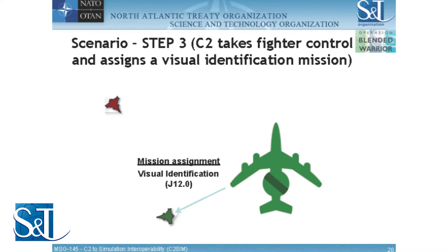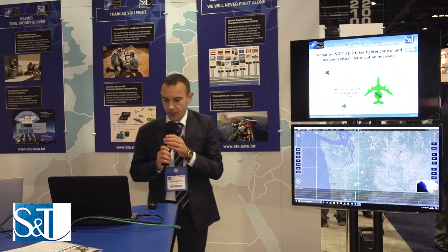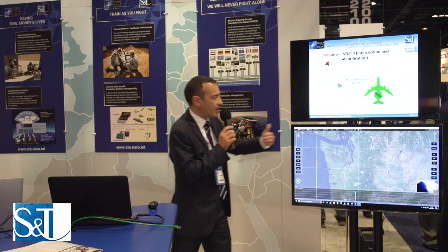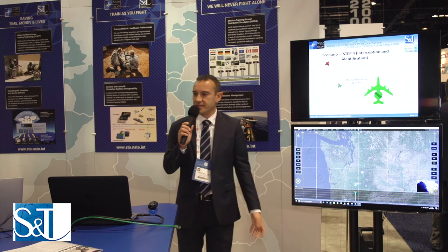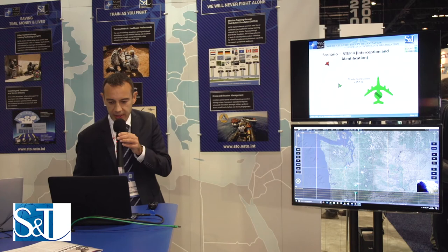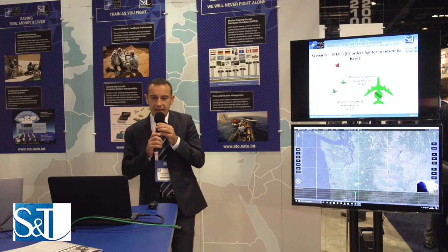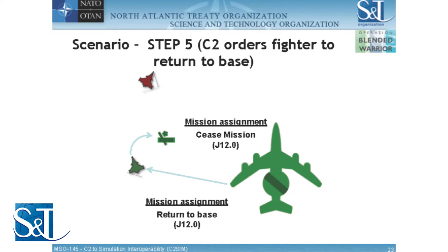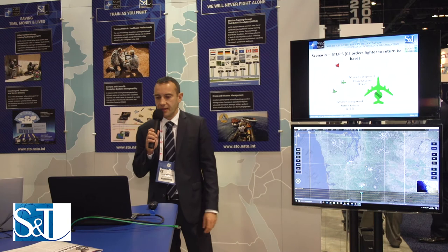Step three: the AWACS assigns a mission to the Rafale to proceed with visual identification of the threat. Step four: the Rafale is flying, changing its route, and flying towards the threat. Using its own sensor, it detects the threat and informs the AWACS. The AWACS then performs track correlation to confirm that the threat it detected and the one the Rafale identified are the same. Step five: the threat withdraws, flies back north. The Rafale receives a new order from the AWACS to cease the mission and return to base.